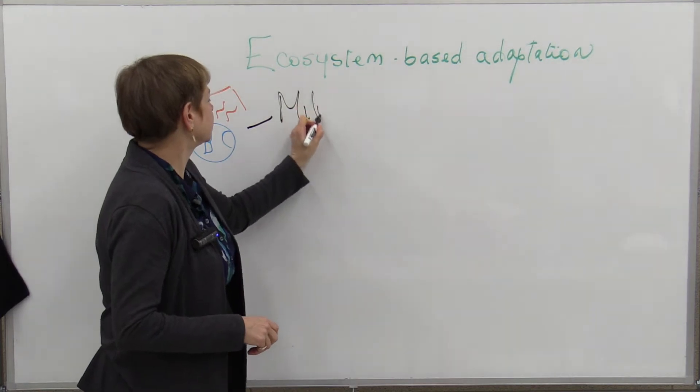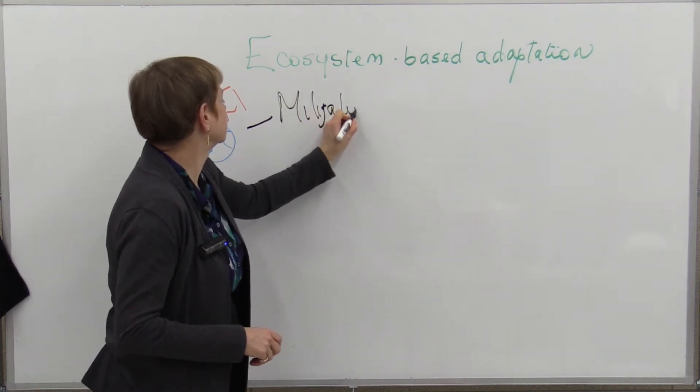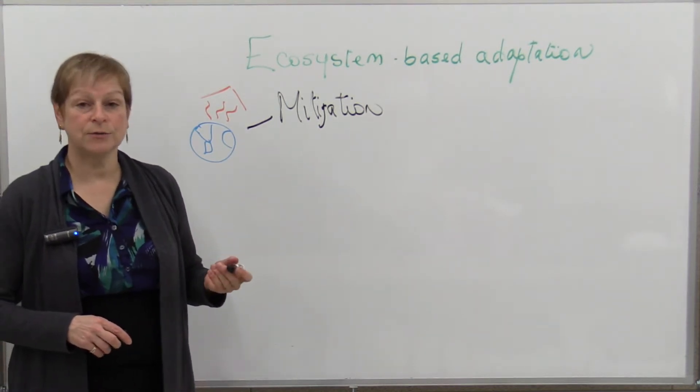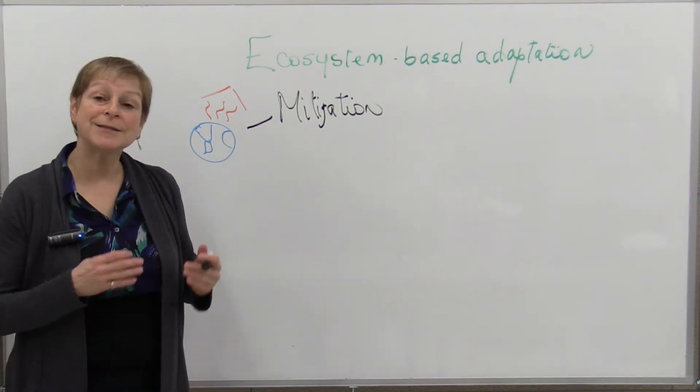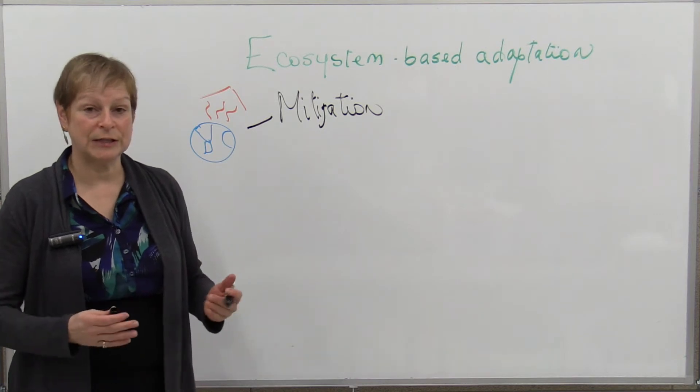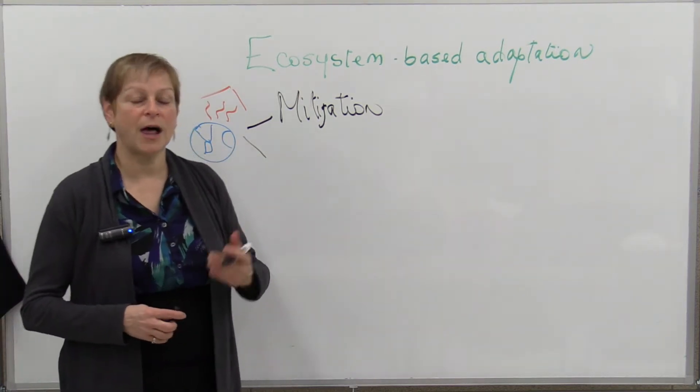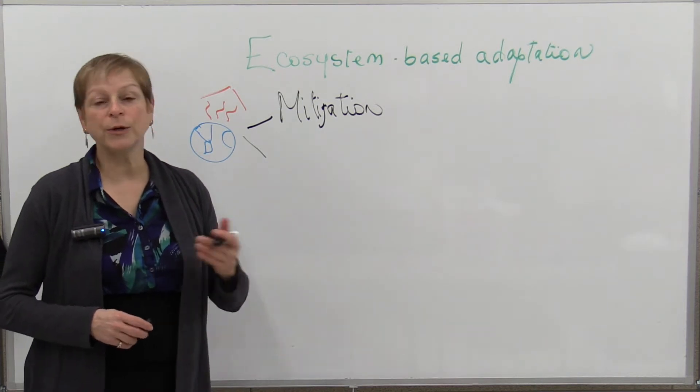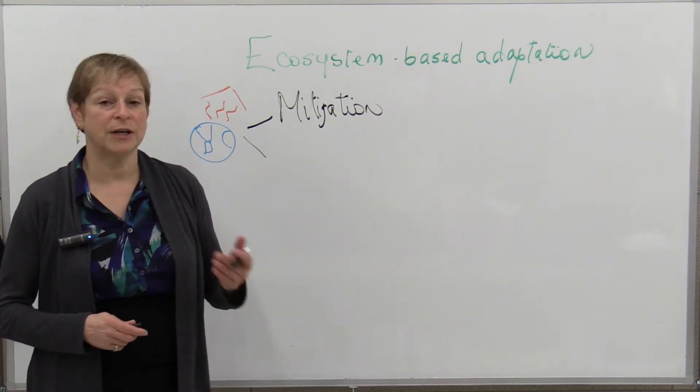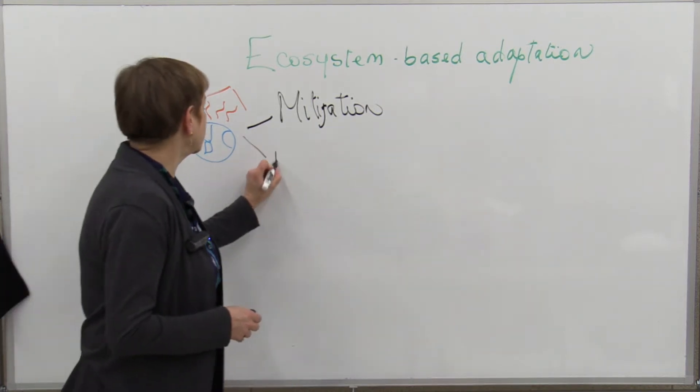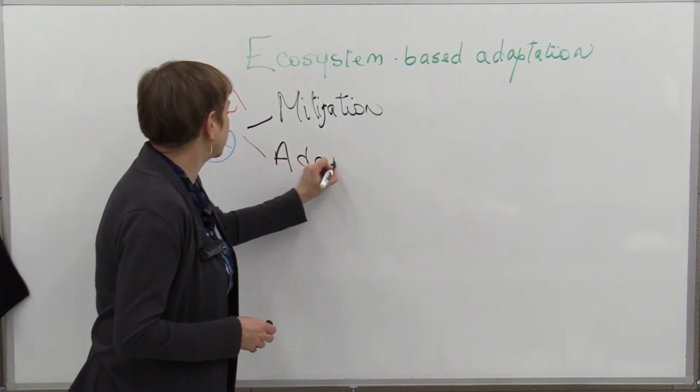So mitigation is one way to reduce greenhouse emissions, and this is needed. We still continue to need that. But at the same time, because we know that climate is changing and it's not going to turn back immediately—it will take a while, in fact it's not even sure that it will be reversible—we need also to think about what we call adaptation.